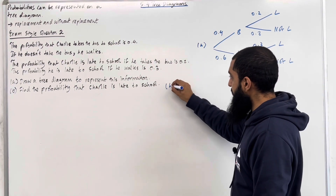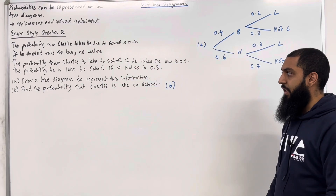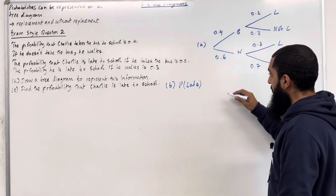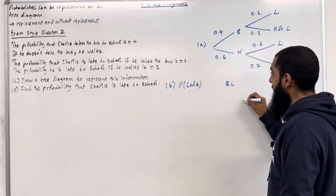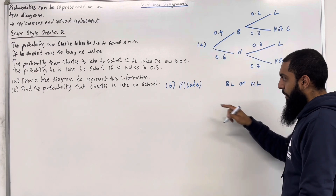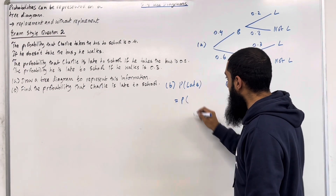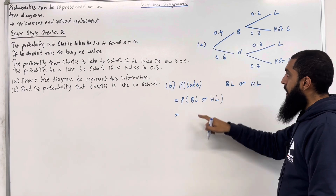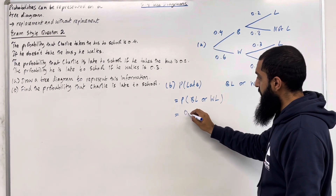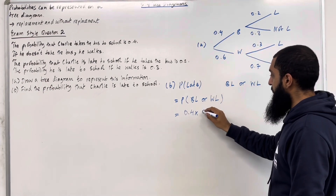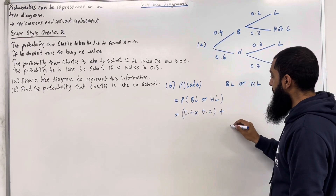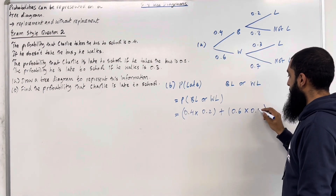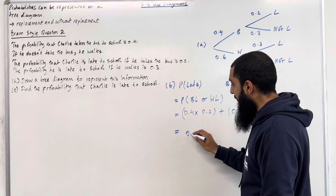Let's have a look at Part B: find the probability that Charlie is late to school. There are two possible combinations: either he takes the bus and is late, or he walks and is late. The probability that Charlie is late is equal to the probability of BL or WL. B is 0.4 multiplied by L which is 0.2, plus W which is 0.6 multiplied by L which is 0.3. Putting this into the calculator gives 0.26.